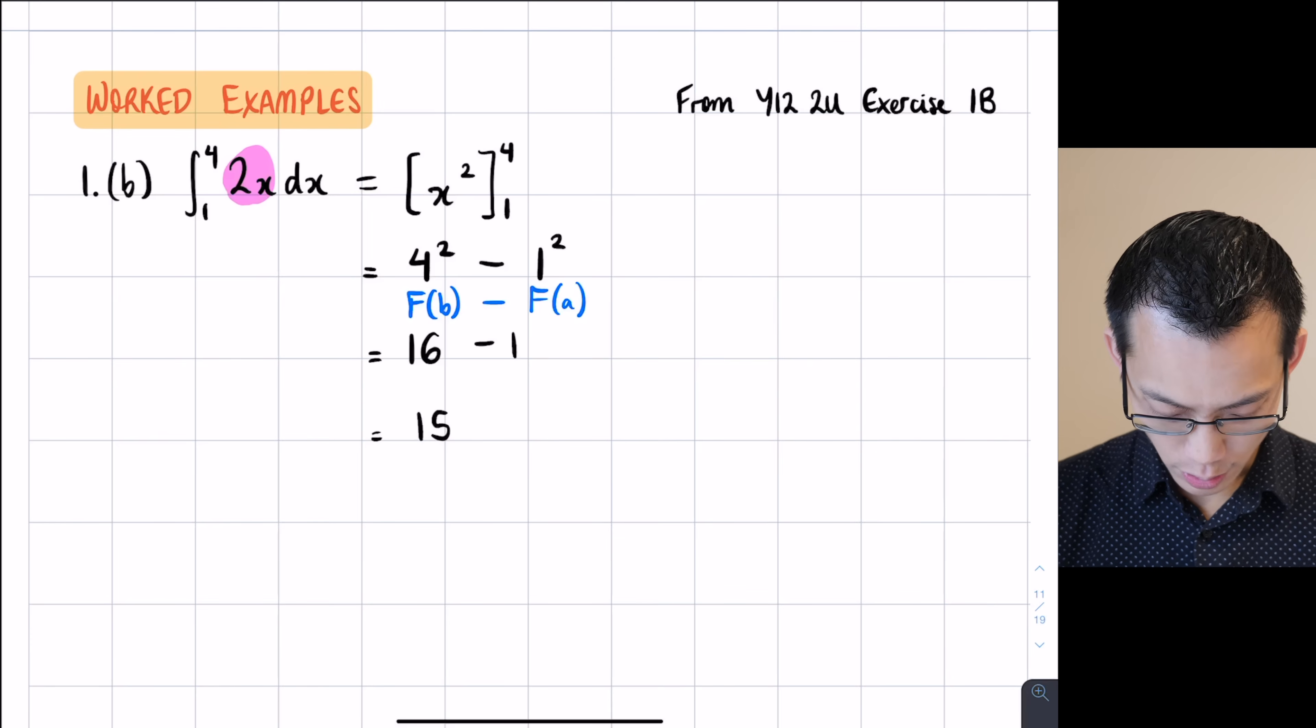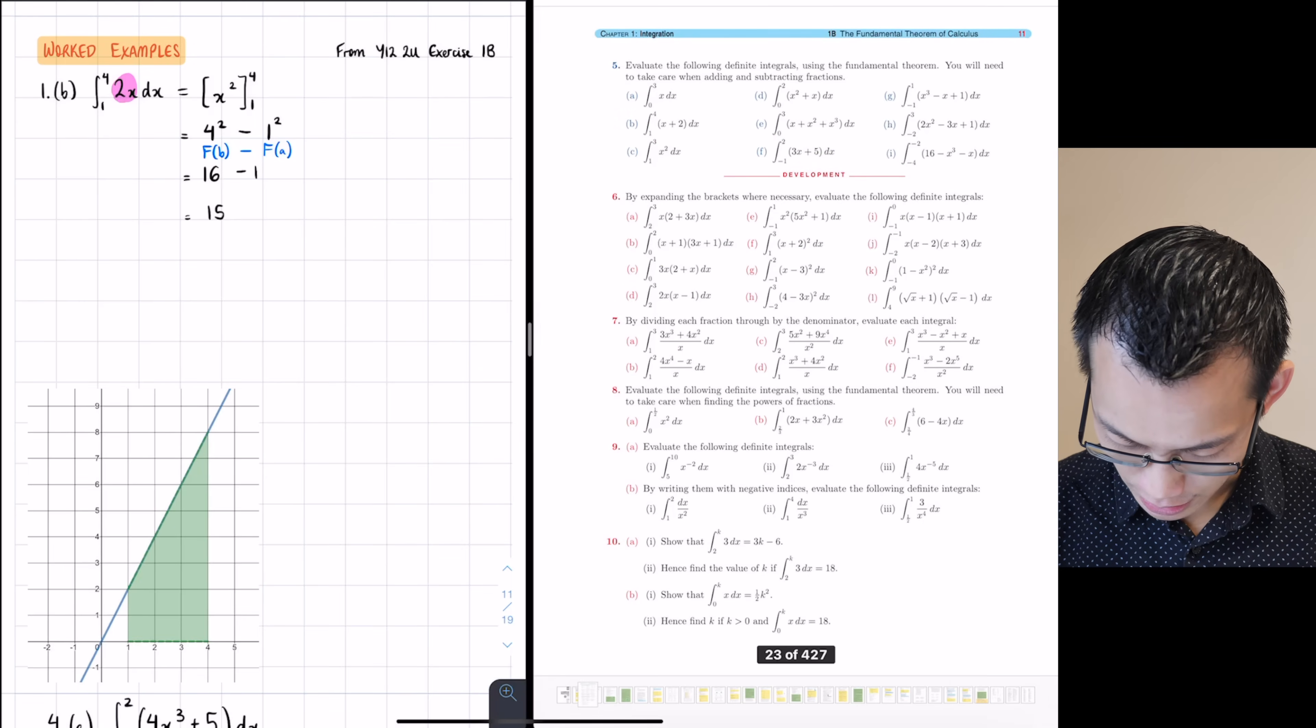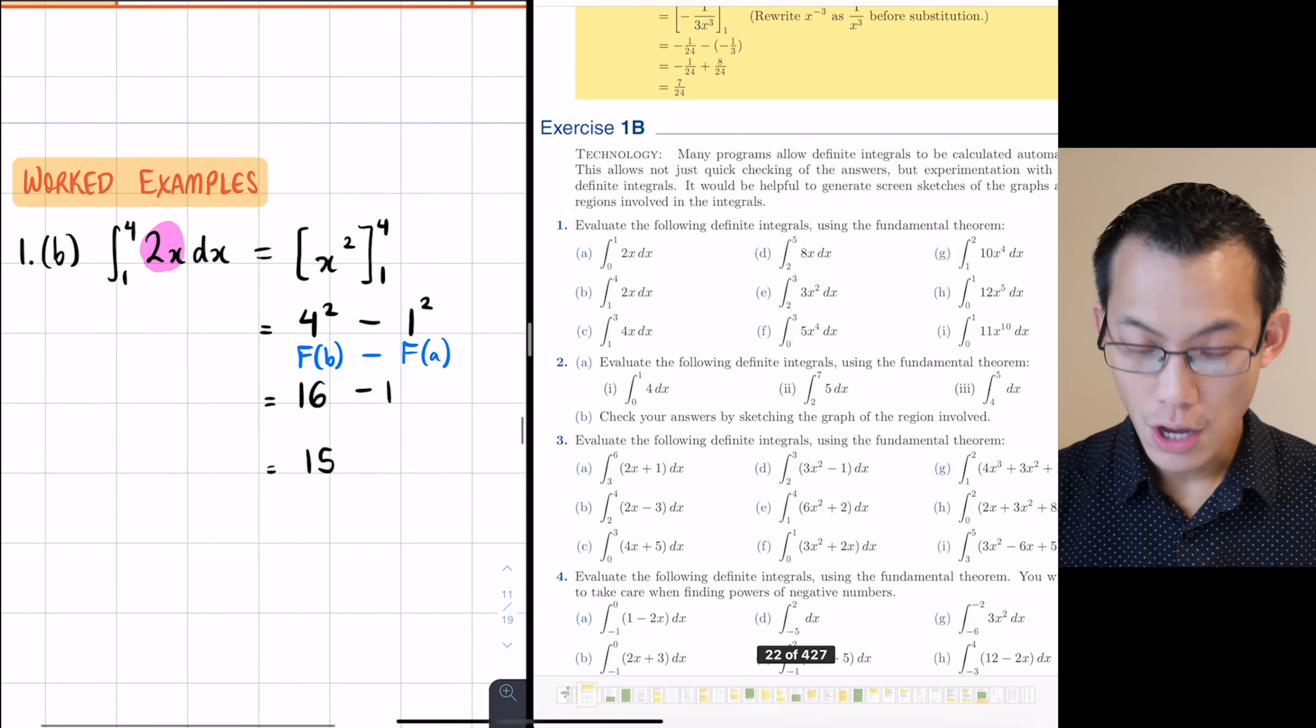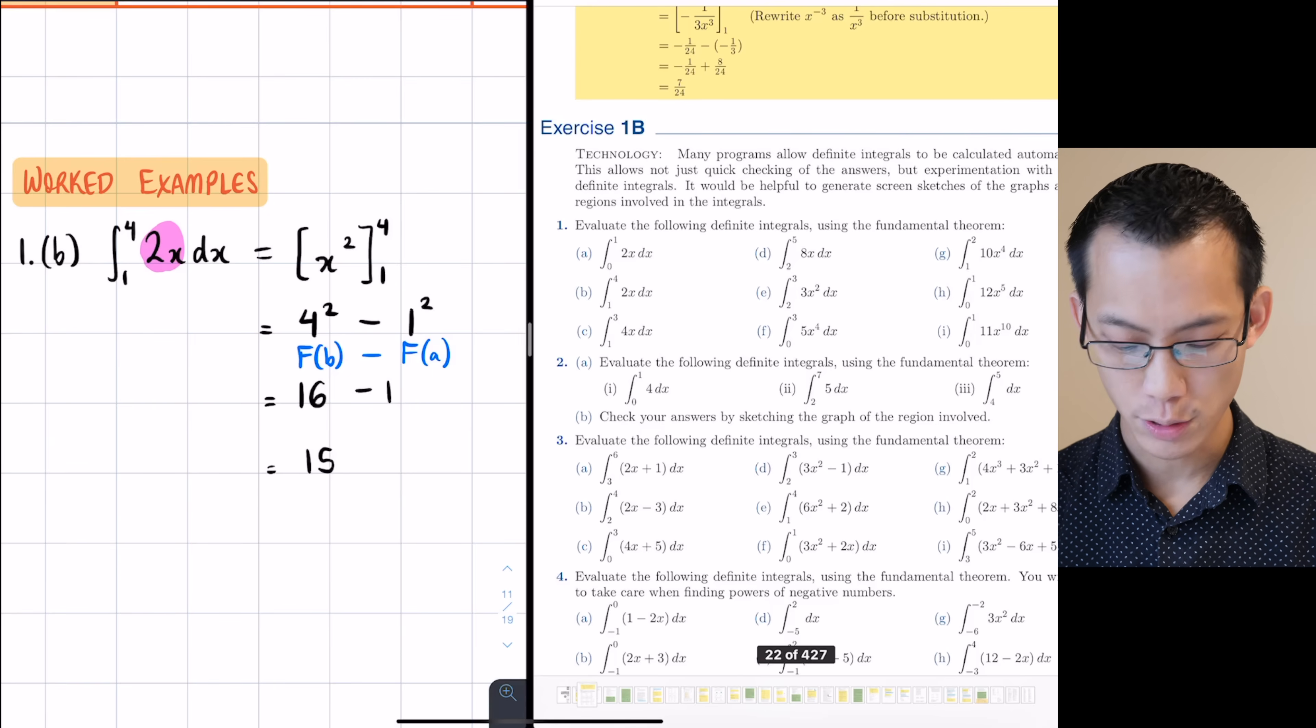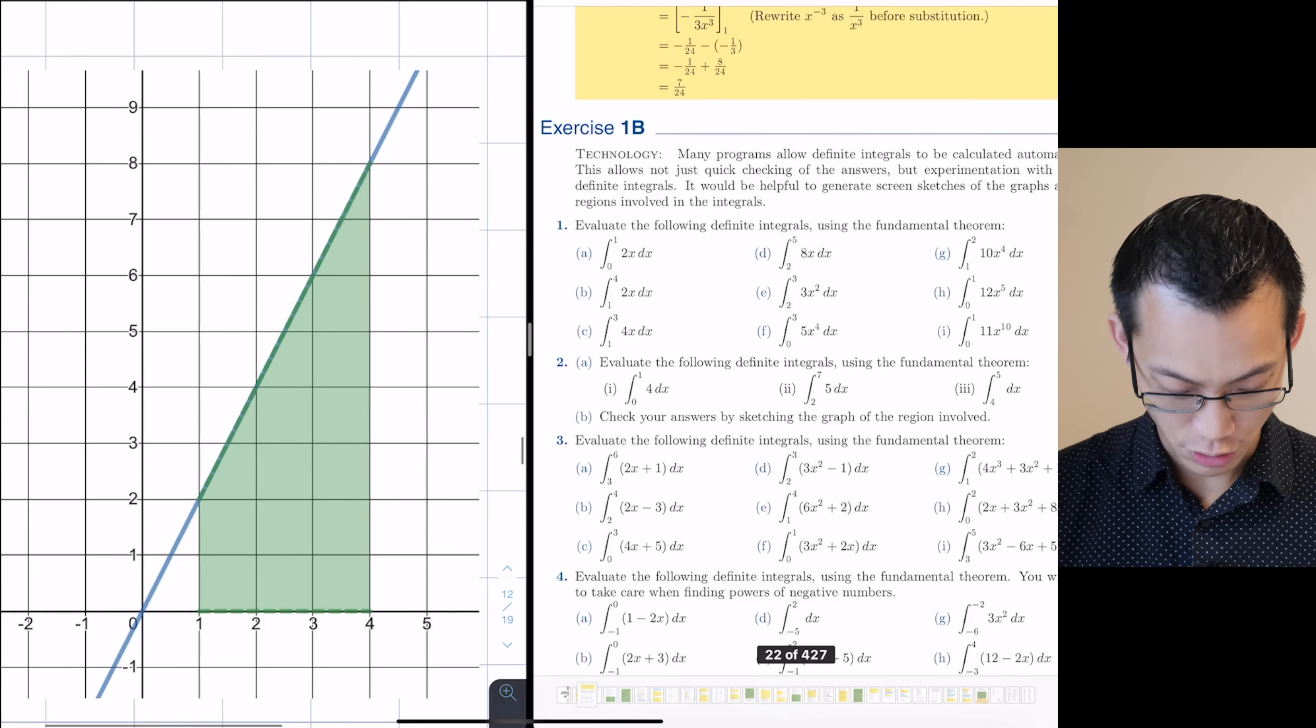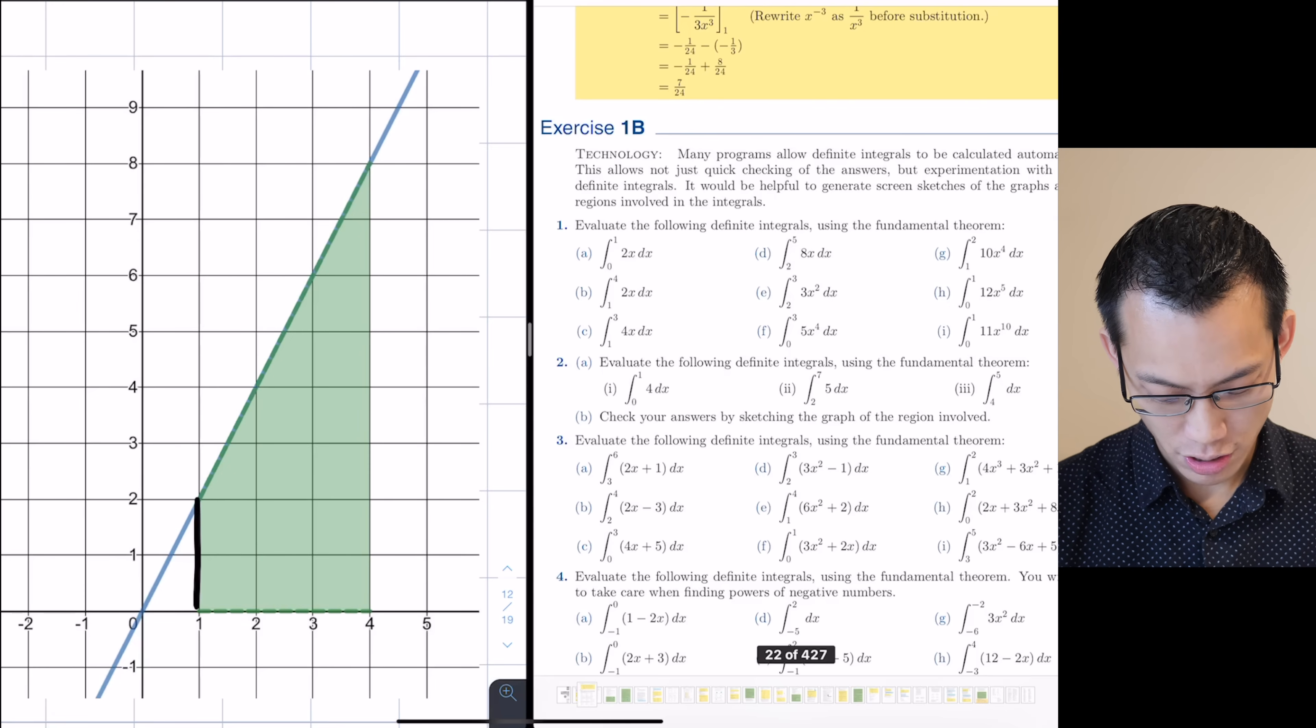At this point here, I will ask all of you to have a quick look at the textbook. At this point, we do actually need to quickly look at the question because the question's wording is very important to us. It says, evaluate the following definite integrals using the fundamental theorem. We can use area to verify that this answer 15 is correct. Let me show you. I've graphed this guy already here. This is 2x and I'm having a look at it from 1 all the way over to 4.